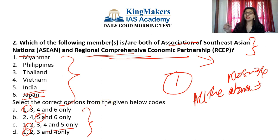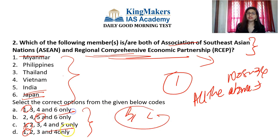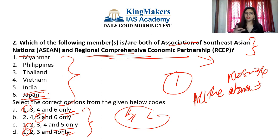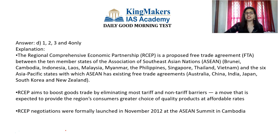What is the Regional Comprehensive Economic Partnership? It's a proposed free trade agreement between the 10 members of ASEAN. Both ASEAN and RCEP are related — RCEP is a free trade agreement among the 10 ASEAN member states. Those 10 states include Myanmar, Philippines, Malaysia, Indonesia, Cambodia, Thailand, Vietnam, Singapore, and others. RCEP also consists of six Asia-Pacific states with which ASEAN has existing free trade agreements, including India, Japan, China, Australia, South Korea, and New Zealand.